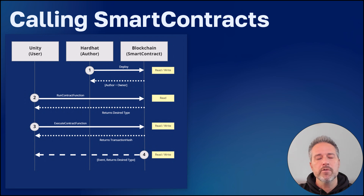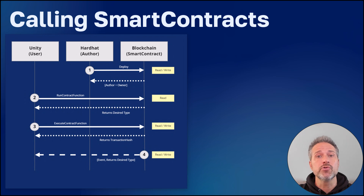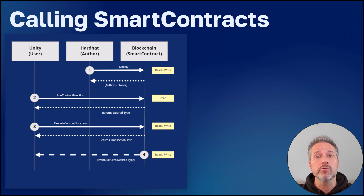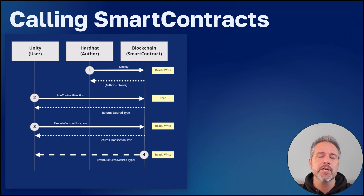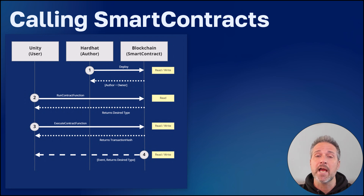The run contract function is able to do read-only operations on the blockchain, and you get a strongly typed value returned back. The execute contract function allows you to do read and write operations on the blockchain, and you get the transaction hash back from the contract.